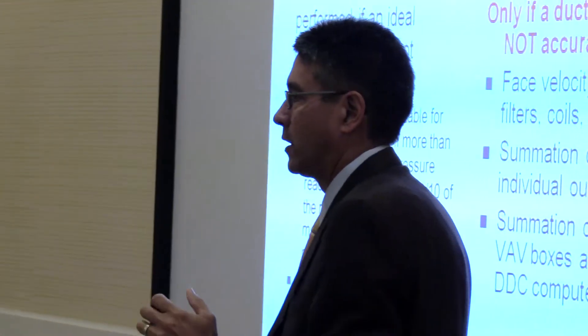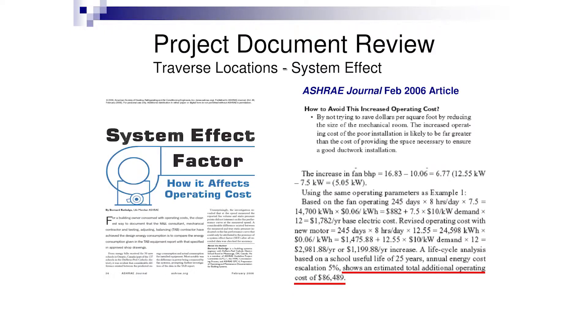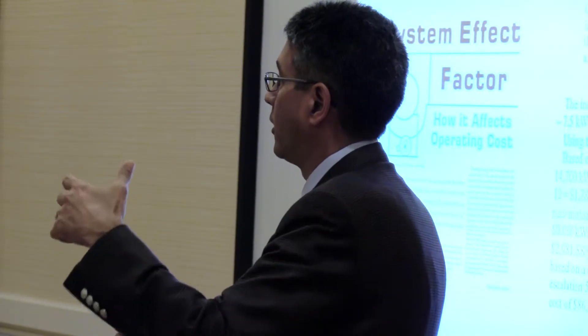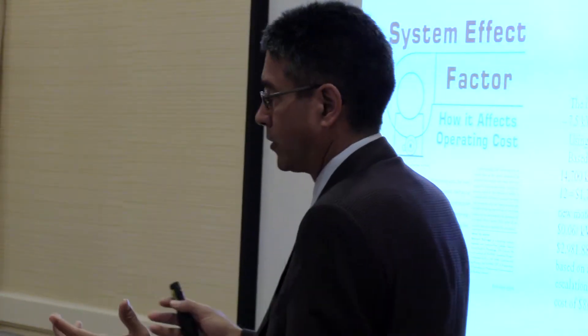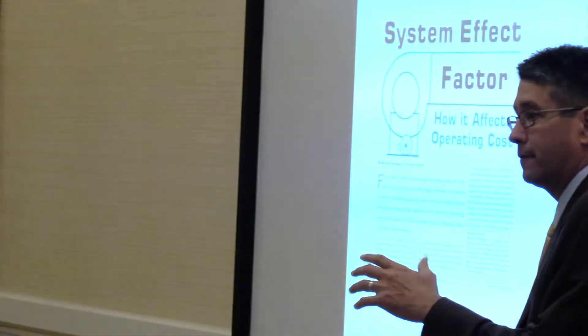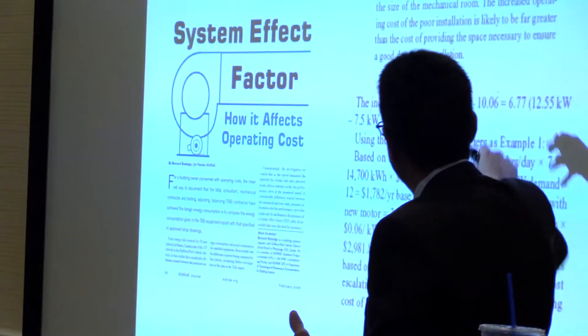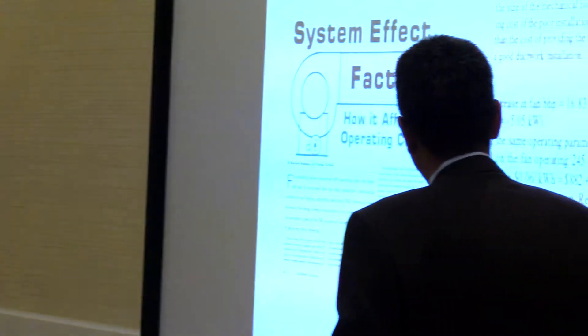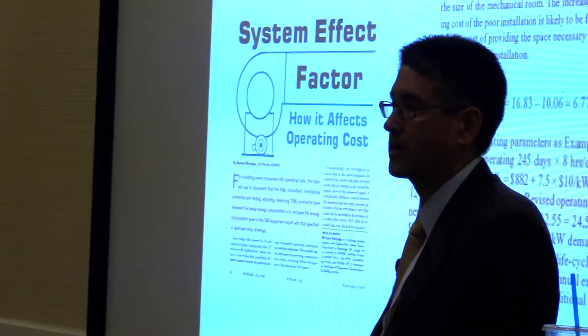We love a traverse — everything we try to do airflow measurement-wise is always backed up by a traverse. ASHRAE back in 2006 published an article on system effect factor and how it affects operating cost. A school district in Canada studied all their schools, determining how much system effect was affecting all their fans and air handlers. In one example, they were reducing 6.77 horsepower on one air handler — saving roughly $1,200 a year with a straight duct run. Taken over 25 years life cycle cost, that was $86,000 for just one unit.